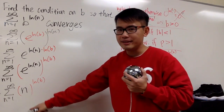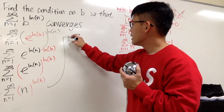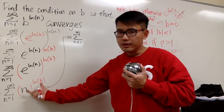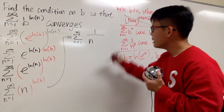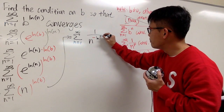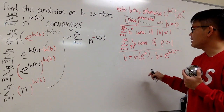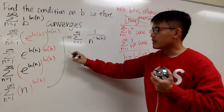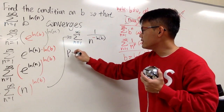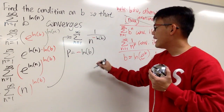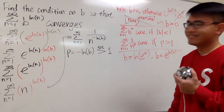We're making progress because now n is the base, and this looks similar to the p-series form. I just have to bring n down to the denominator. So this becomes the sum from n=1 to infinity of 1 over n to the negative ln b power. Now this matches the p-series form, where p equals negative ln b. For convergence, we need p to be greater than 1, so we set negative ln b greater than 1.